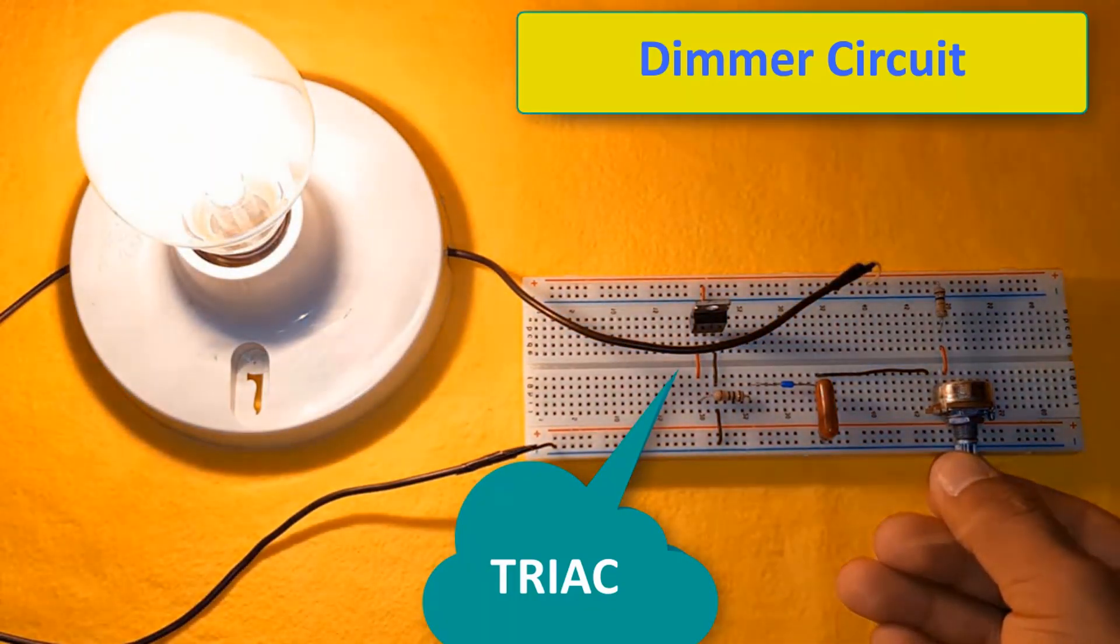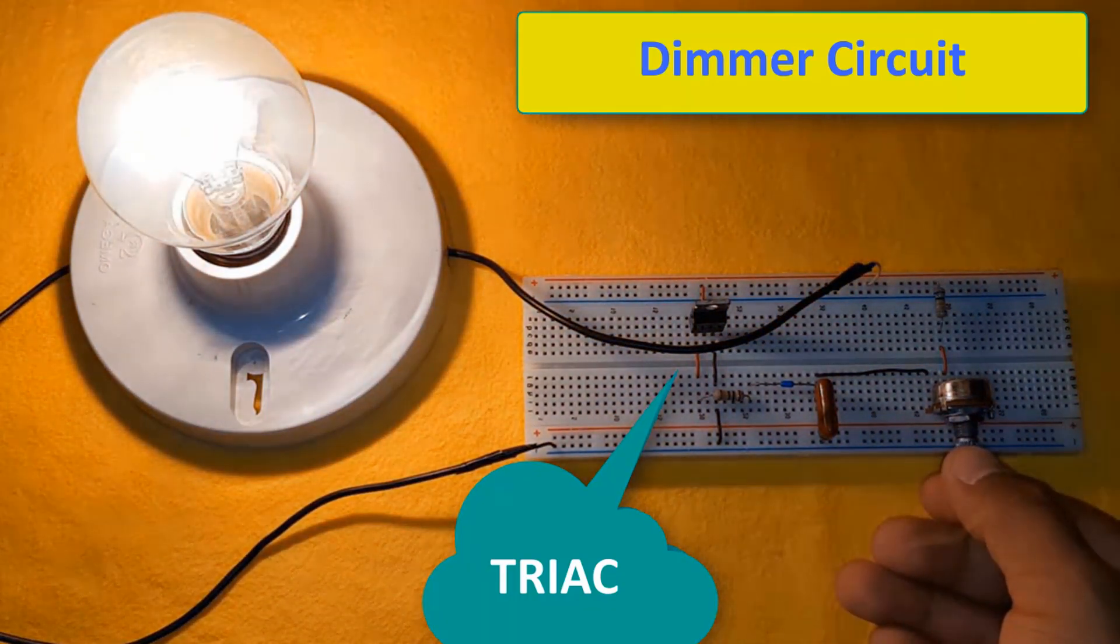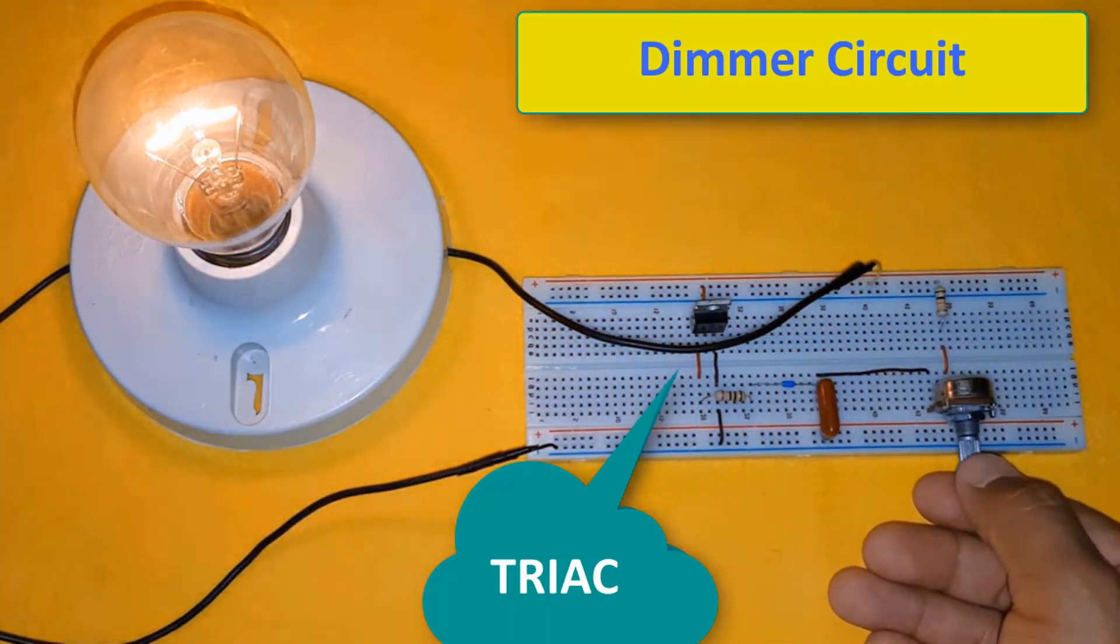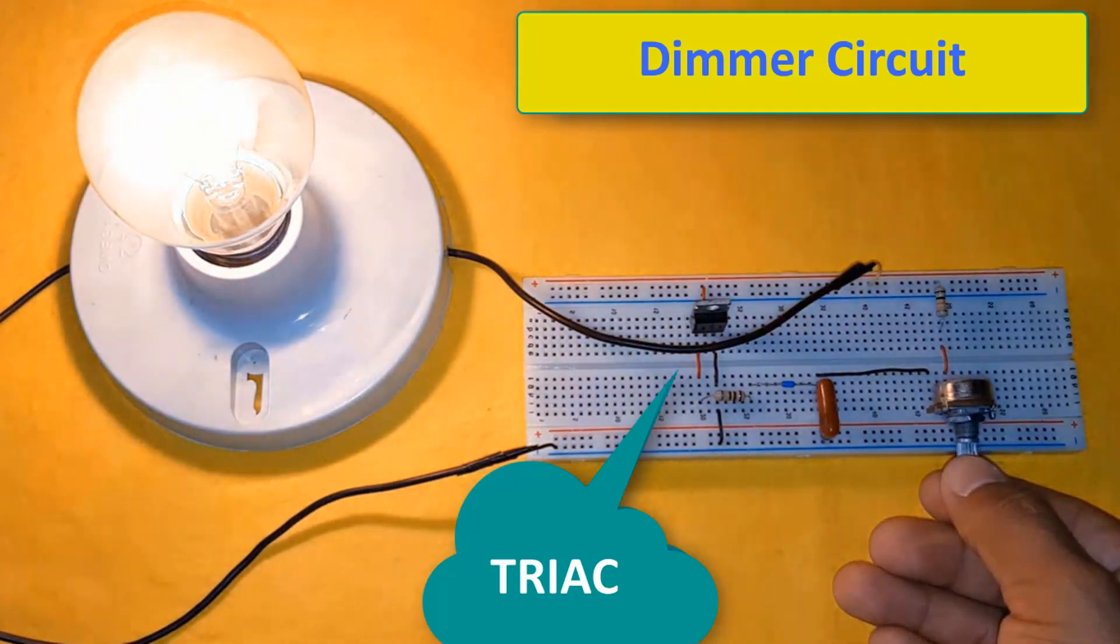In other words, while thyristor is mostly used for DC power applications, we can say that TRIAC is more suitable for use in AC power applications.